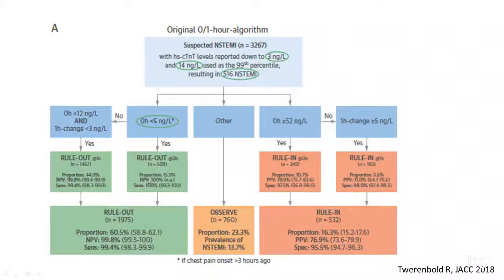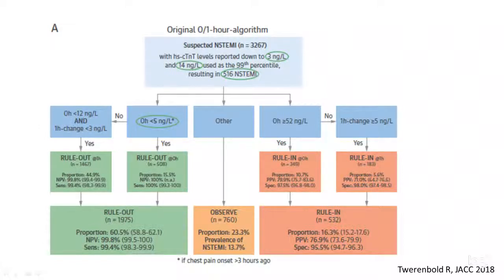If at hour zero the patient had a troponin level less than five and no significant change within an hour, you can rule them out. However, if the initial troponin is more than 52 and there was a change of more than five — which is considered a significant rise — those are the patients that are going to rule in.